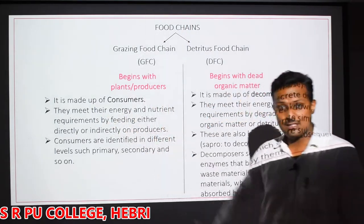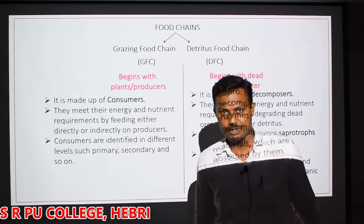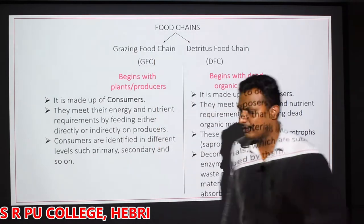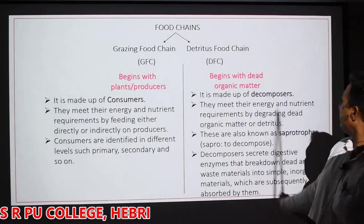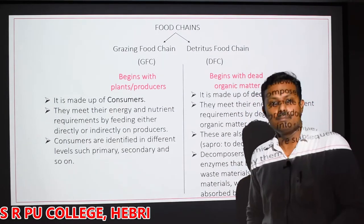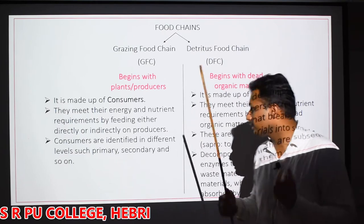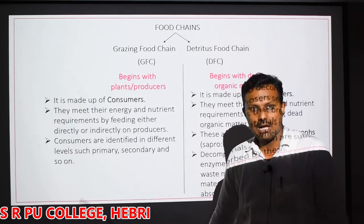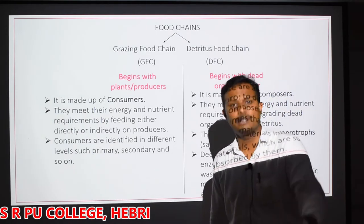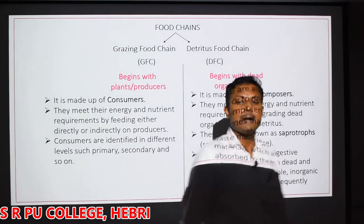Organisms in the GFC meet their energy or nutrient requirement by feeding directly or indirectly on plants - directly feeding means herbivores, indirectly means carnivores at any level. Organisms in the DFC meet their energy requirements by feeding upon dead organic matter and breaking it down. Consumers in the GFC are identified under different levels called trophic levels - primary, secondary, tertiary and so on. We will understand what trophic levels are in the next slide.